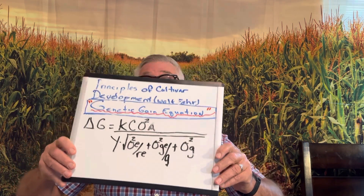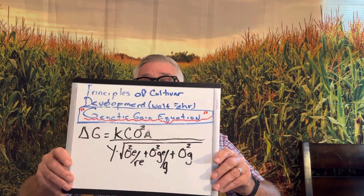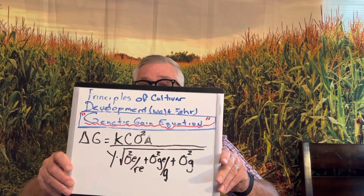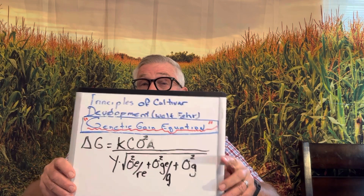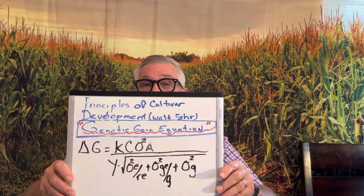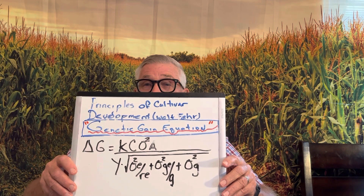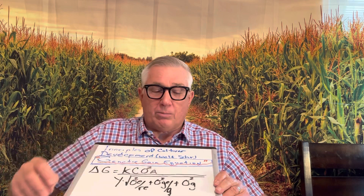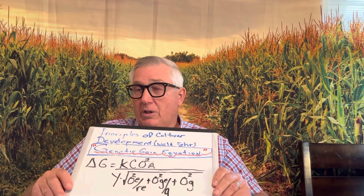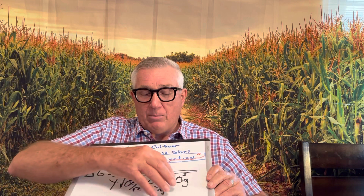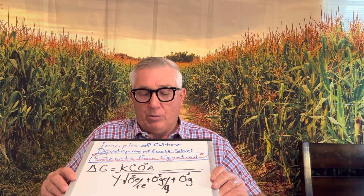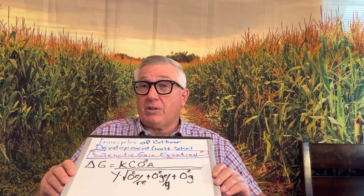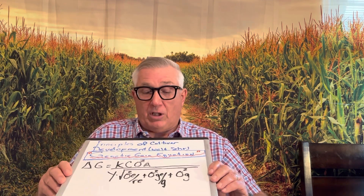This, to me, is the breeder's Bible. If you don't know this by heart and don't practice it in your program or your company's programs, you really ought to ask why you're not. Today we're going to talk about the phenotypic variance component of the model — specifically the genotype by environment interaction component, which is essentially genotypes by environments divided by the genotypes and the variance that arises thereof.